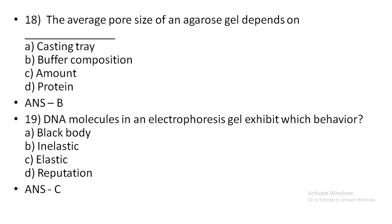DNA molecules in gel electrophoresis exhibit which behavior? DNA of the gene acts as a log, which is called the lower bone. Option D: black body. Option D: inelastic. Option C: elastic. Option D: reputation. The correct answer is option C: elastic.